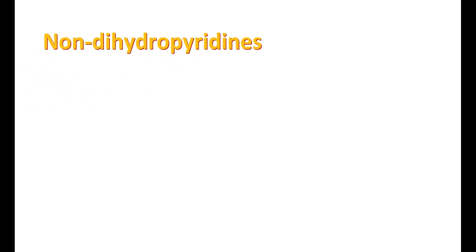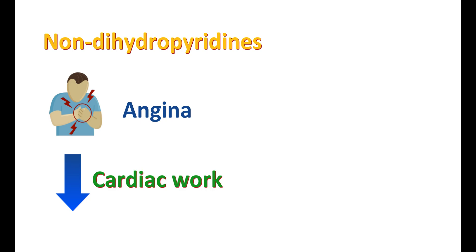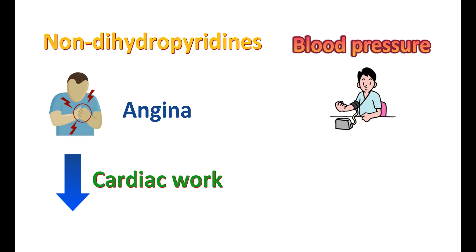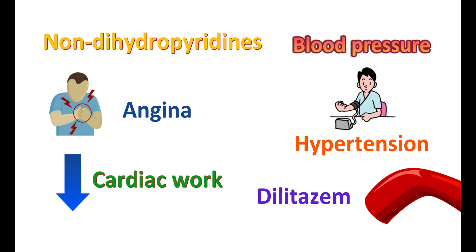Non-dihydropyridines can also be used for angina. Since they directly act on the heart, they reduce the rate of contraction and cardiac workload, thereby reducing oxygen utilization by cardiac cells and relieving angina symptoms. Both dihydropyridines and non-dihydropyridines can be used for angina. Verapamil can also manage blood pressure by reducing cardiac contraction. Diltiazem has some selectivity toward vascular smooth muscle, giving it a stronger blood pressure-lowering effect. Notably, dihydropyridines are not suitable for cardiac arrhythmias, whereas non-dihydropyridines can be used for arrhythmias.